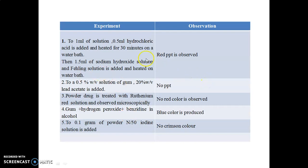For the chemical tests: the gum shows a positive Fehling's test. After hydrolysis with mineral acid, it generates reducing sugars and ultimately produces a red precipitate in the presence of Fehling's solution. The test procedure: to 1 ml solution, add 0.5 ml hydrochloric acid, heat for 30 minutes on a water bath, then add 1.5 ml sodium hydroxide solution and Fehling's A and Fehling's B solutions — on heating, a red precipitate is produced.